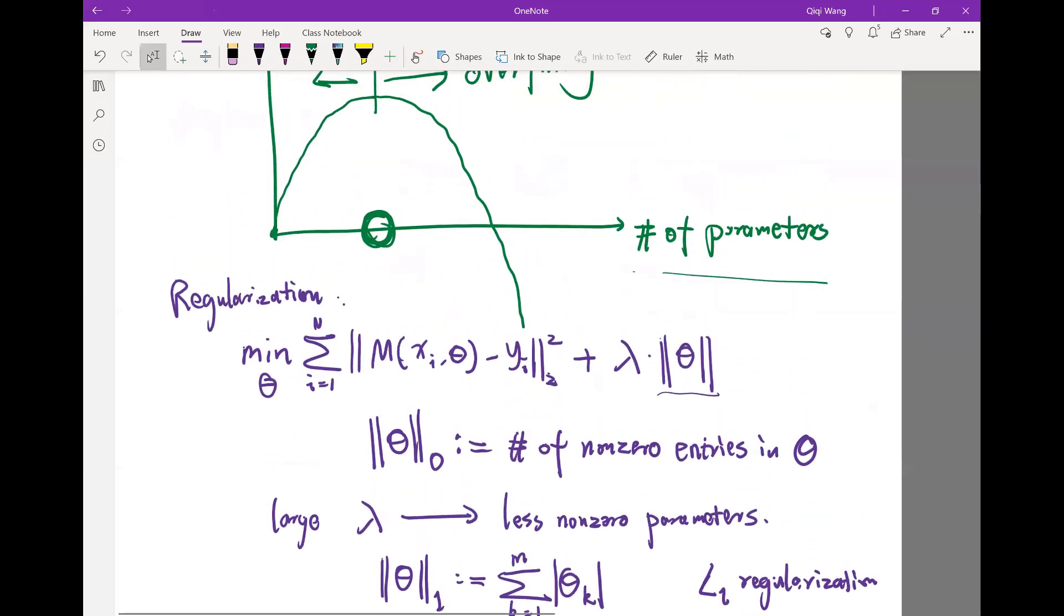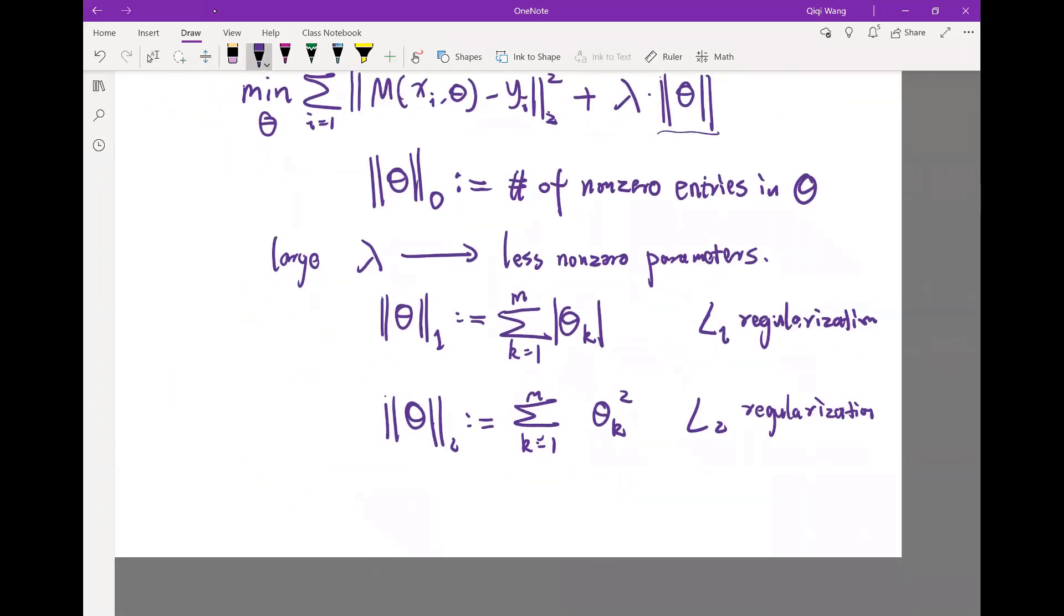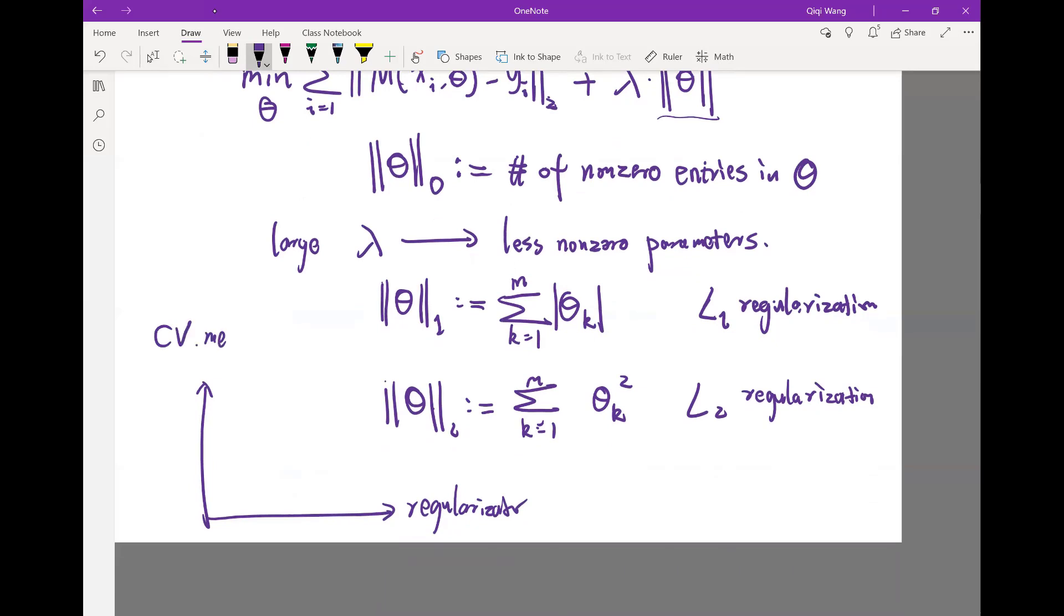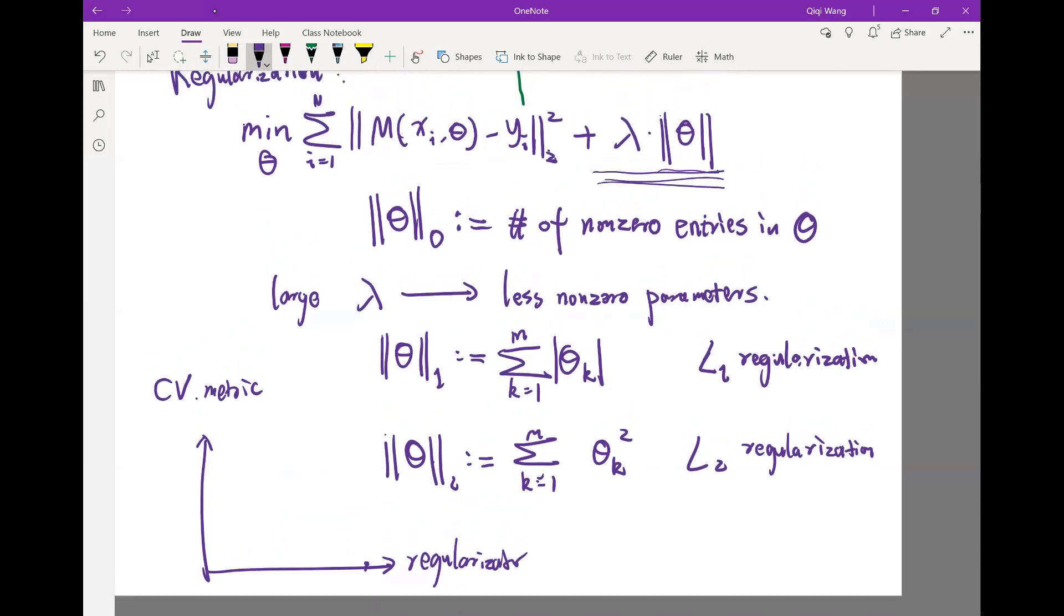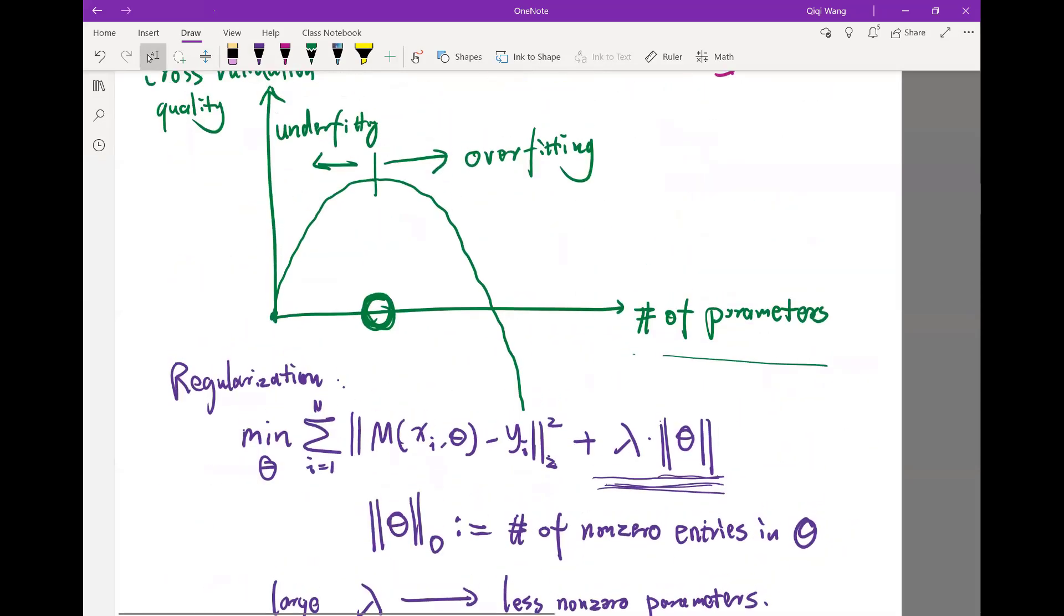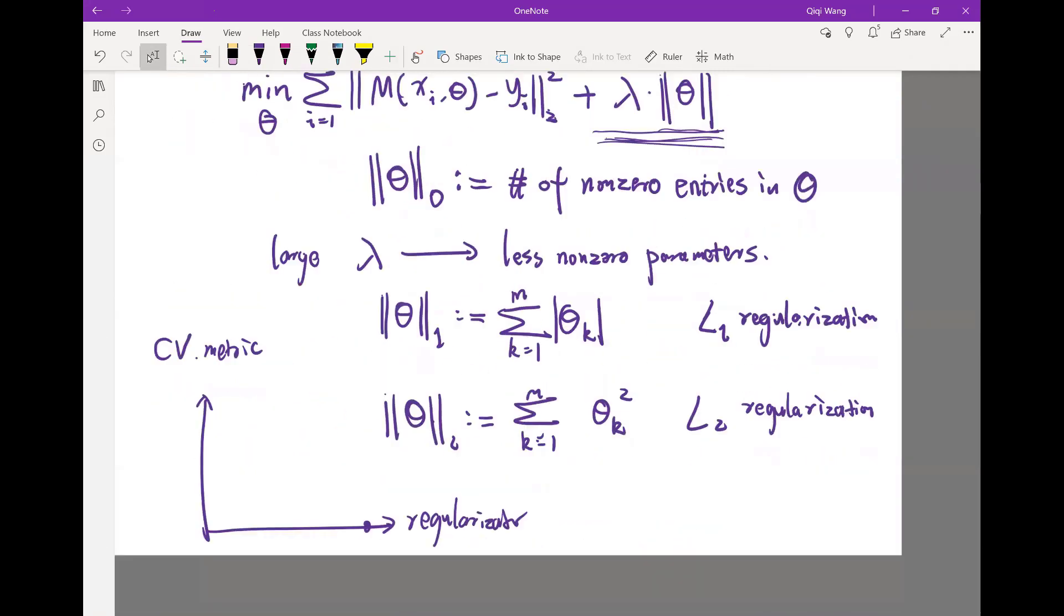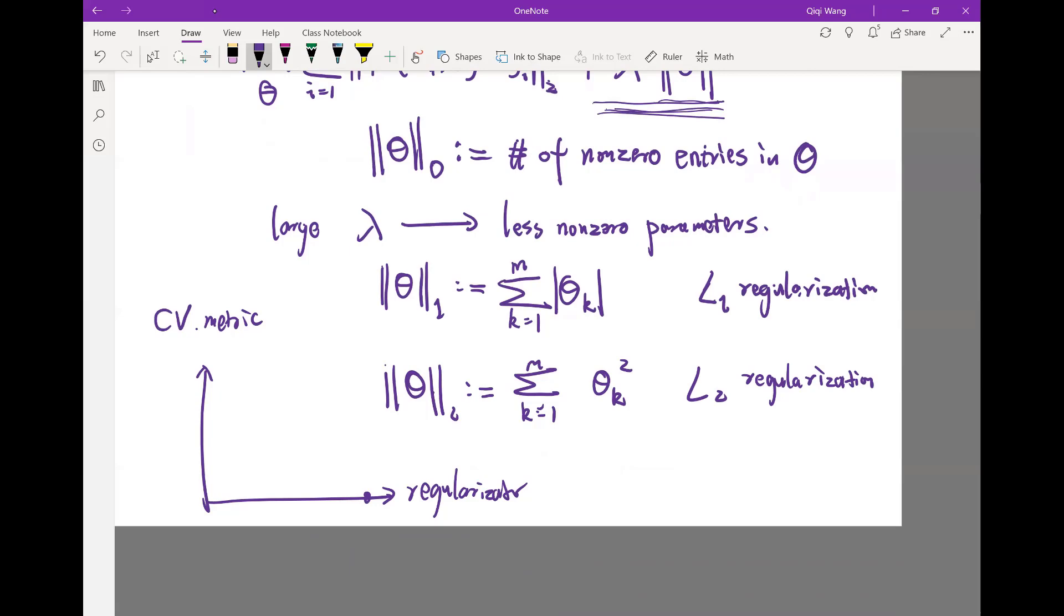But essentially you can draw a similar curve with respect to the regularization but backwards. So this is amount of regularization, and this is the cross-validation metric. At maximum regularization, when the regularization term completely dominates, the entire focus is going to be on minimizing the norm of the parameters. Your data doesn't really matter. At this point, you are essentially getting the same quality as having zero parameters. So this is going to be the most under-fit case. So the CV metric starts over here when you have infinite regularization.